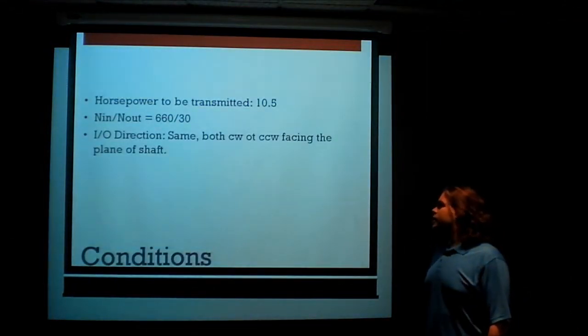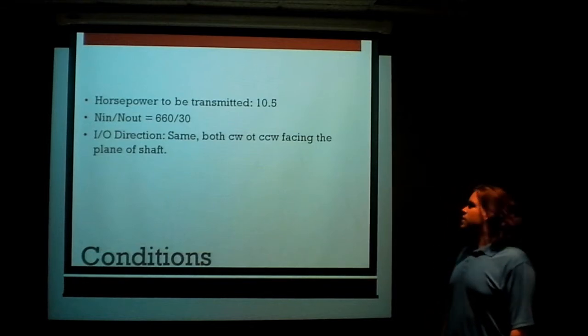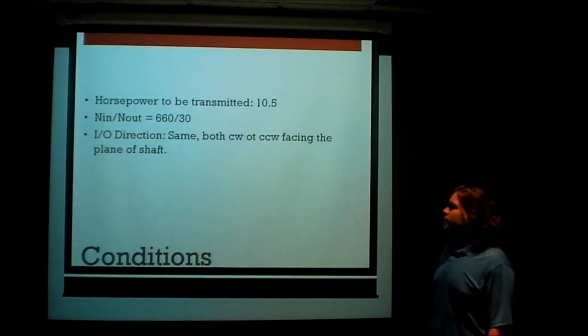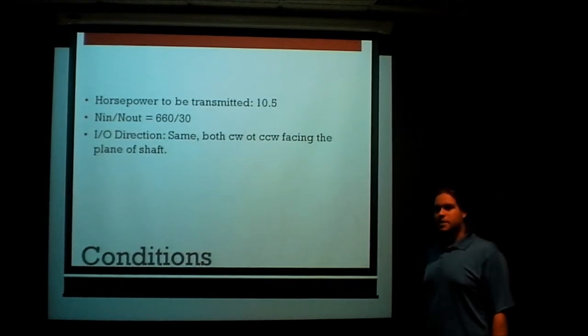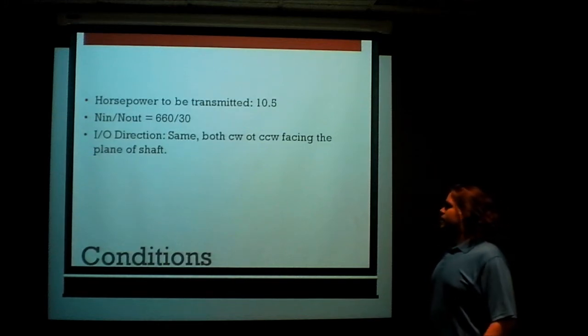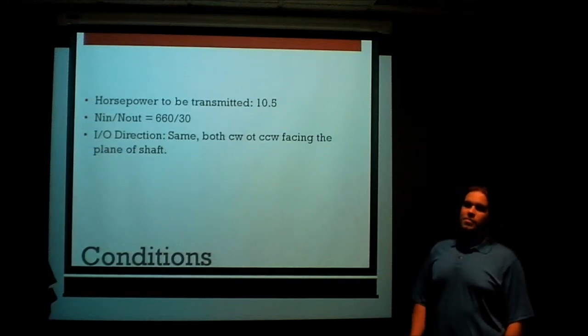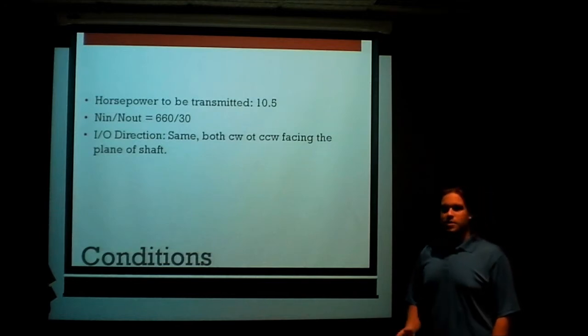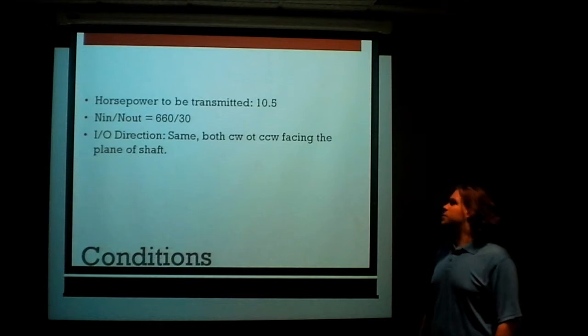The conditions that we were given by Dr. Tosunoglu was an input horsepower of 10.5, a reduction from 660 to 30, which is a 22 to 1, and that the input direction of the shaft is also the output direction, meaning when facing the surface they are both spinning in the same direction.